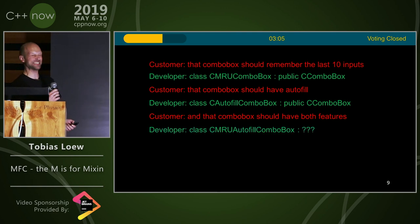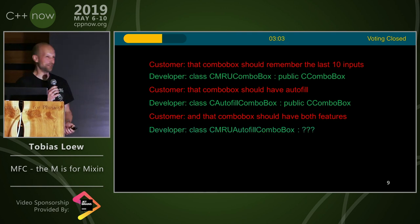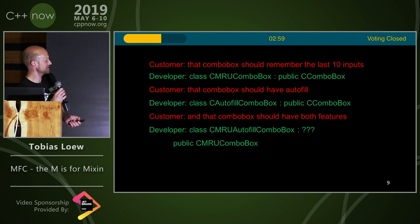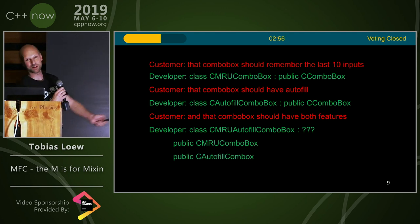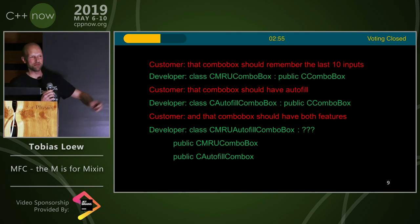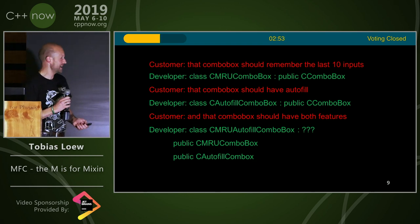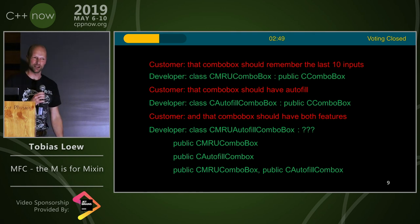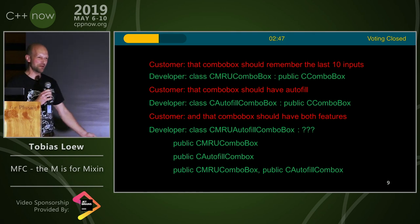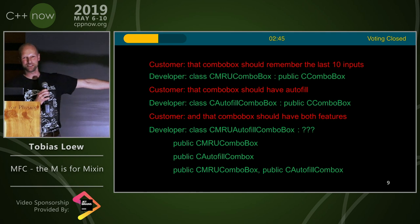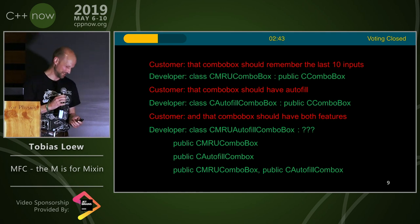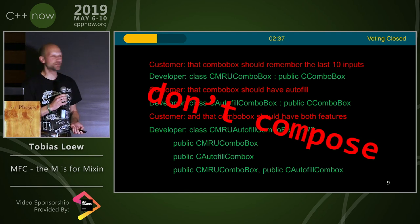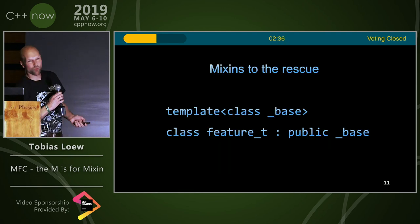So the developer asks: 'What should I derive from? I could take the MRU combo box or the AutoFill combo box, but in both cases I would have to do some copy and paste.' What you can't do is derive twice from an MFC class, because the MFC class must always be first in the base class list — so they simply don't compose.